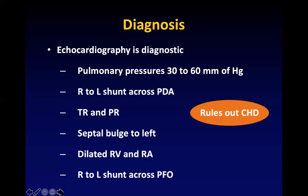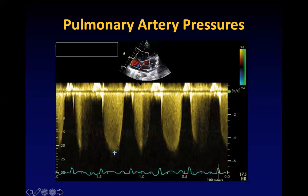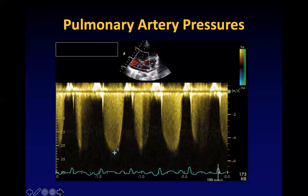Before starting specific treatment like sildenafil or iNO you need to rule out cardiac disease. The echo shows tricuspid regurgitation — you calculate the pressure difference between the right ventricle and right atrium using the formula 4V², and to that add the right atrial pressure of 8 to 10 mmHg to get the adjusted pulmonary pressures.